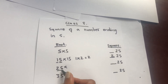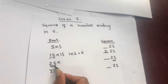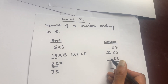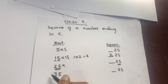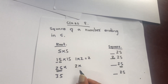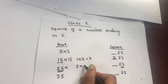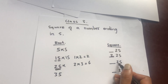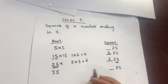Similarly, for 25: the last two digits are 25 since the number ends with 5. Now look at the digit in front of 5, which is 2. Multiply 2 by one greater than 2, that is 3: 2 into 3 equals 6. So the number in front of 25 will be 6, and 25 squared is 625.